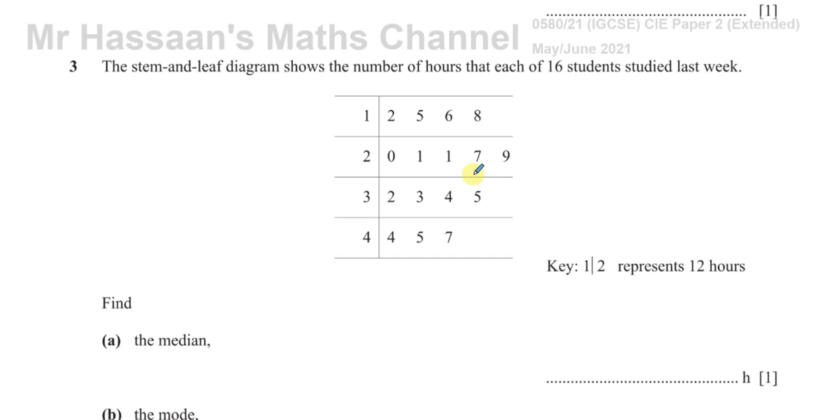This question is about statistics, about stem-and-leaf diagrams which show the number of hours that each of 16 students studied last week. They've given us a key for the stem-and-leaf diagram which shows that the numbers before this line represent the tens and the numbers after this line represent the units because 1 stroke 2 means 12 hours. So for example, this number here represents the number 27.